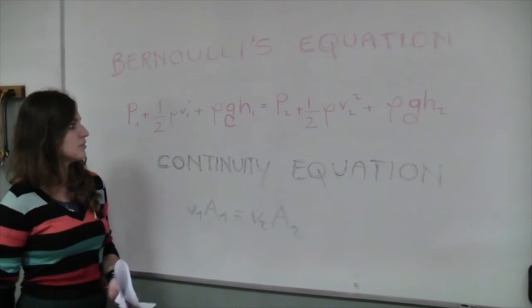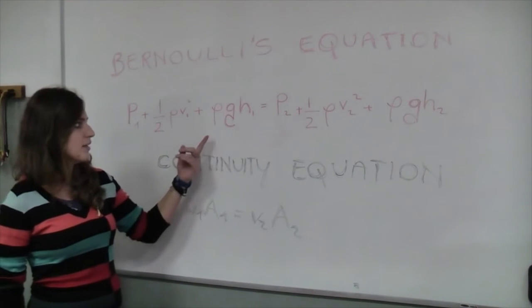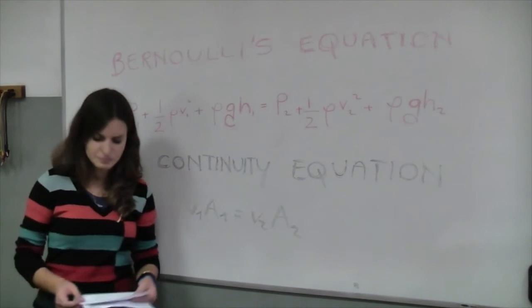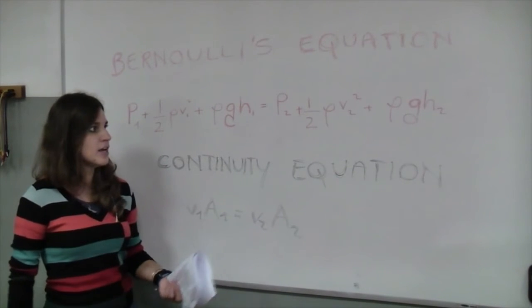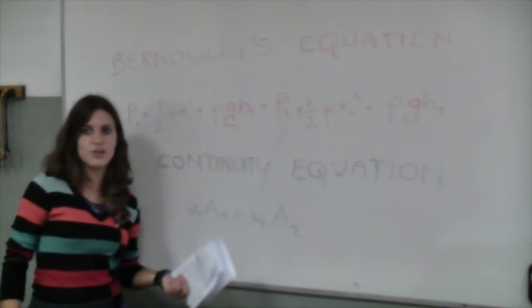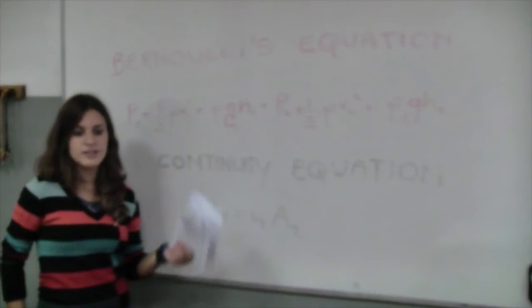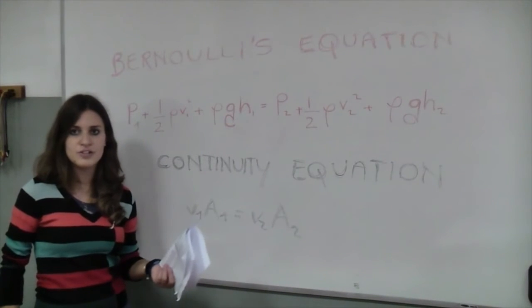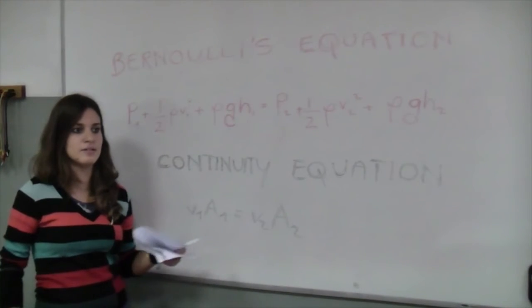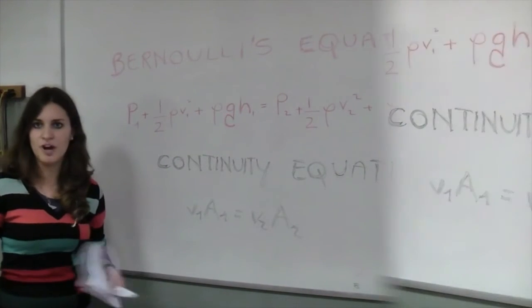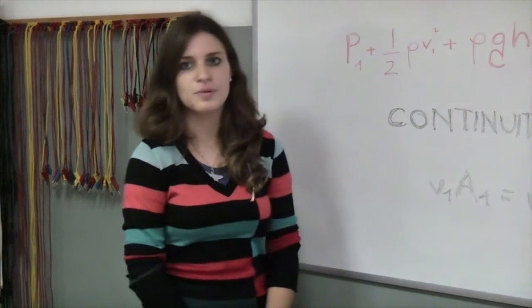In talking about a wing, we can omit the variation of potential energy. So we can see that if the speed increases, pressure must decrease. This pressure difference causes an upward thrust that makes the plane fly.